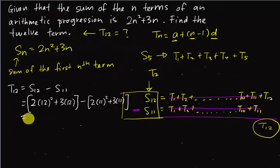Then of course I will use calculator to solve this. 2 × 144 + 36 gives 324 minus 2 × 11² (which is 121) plus 33 gives 275. So I will get 324 - 275, which equals 49. So I think this will be my 12th term.